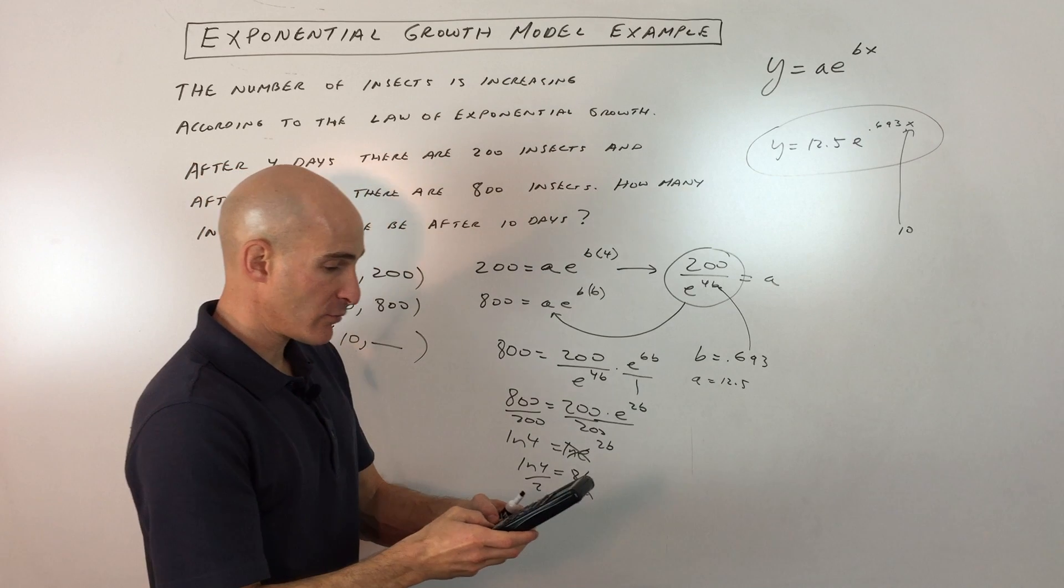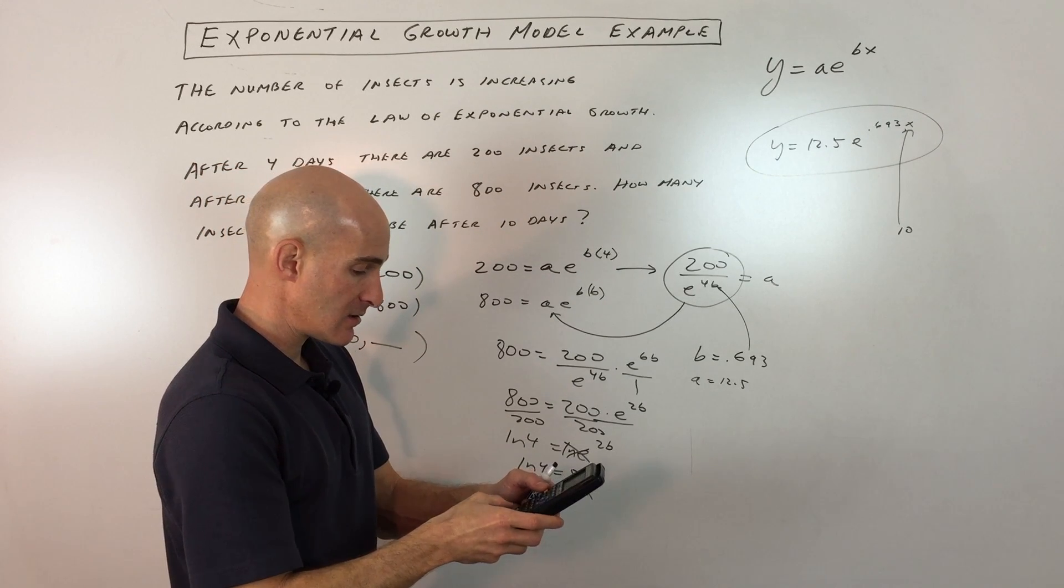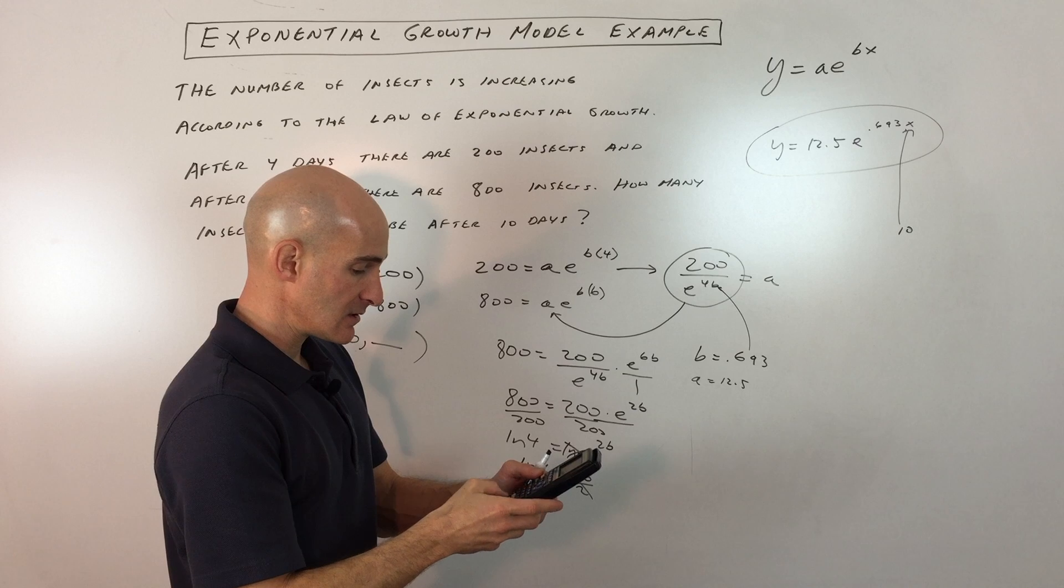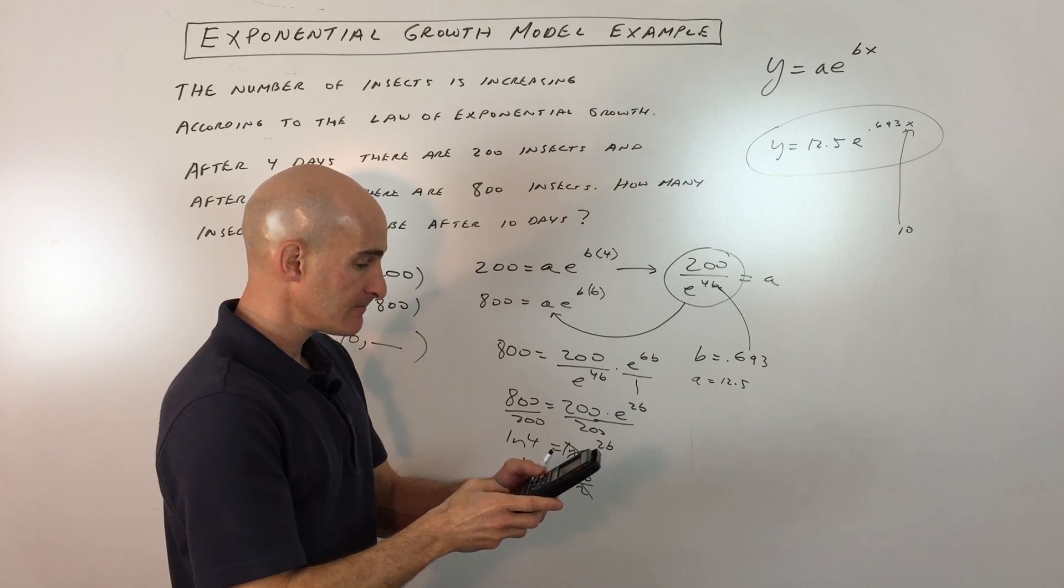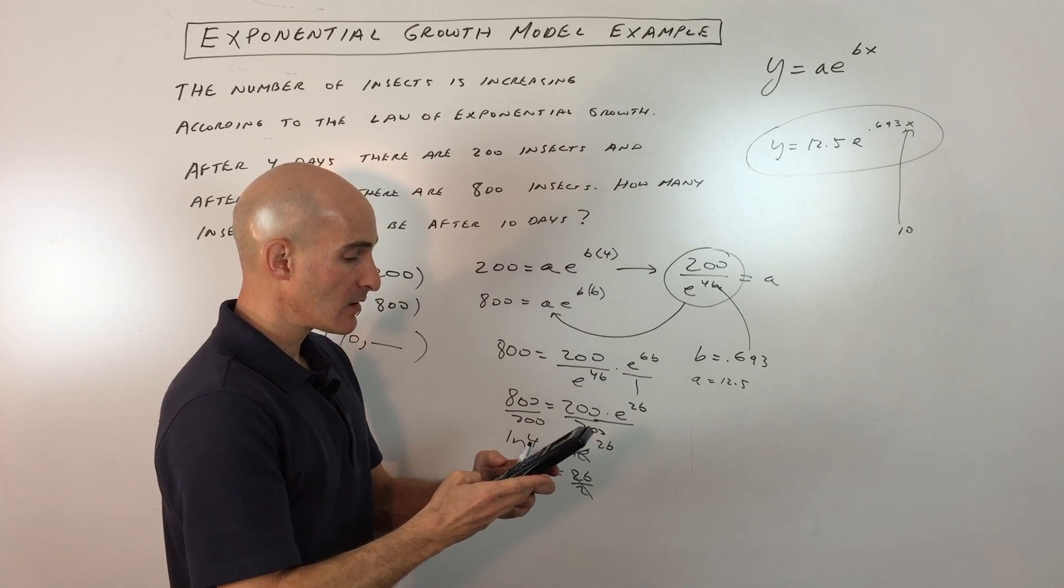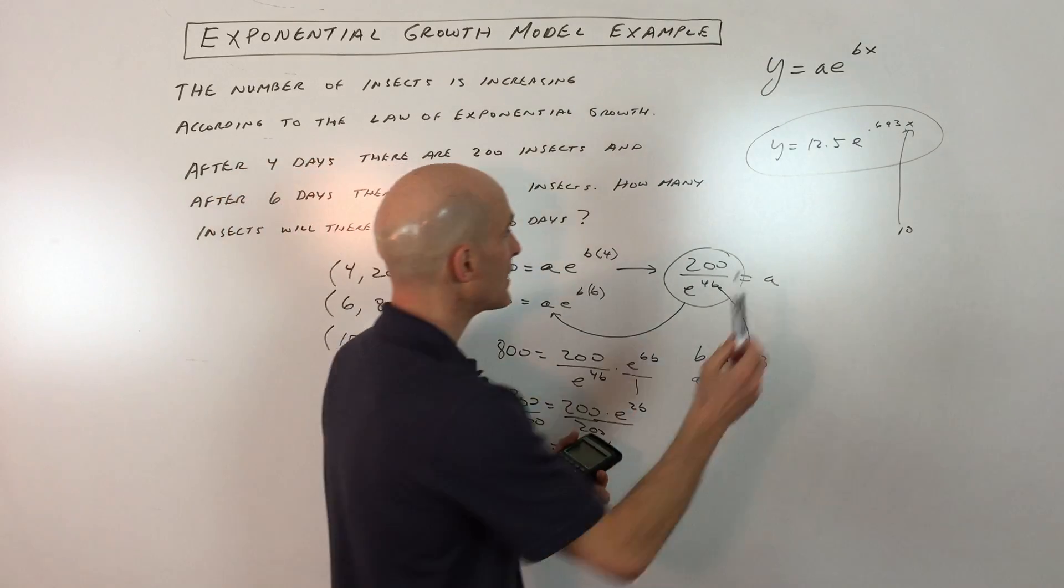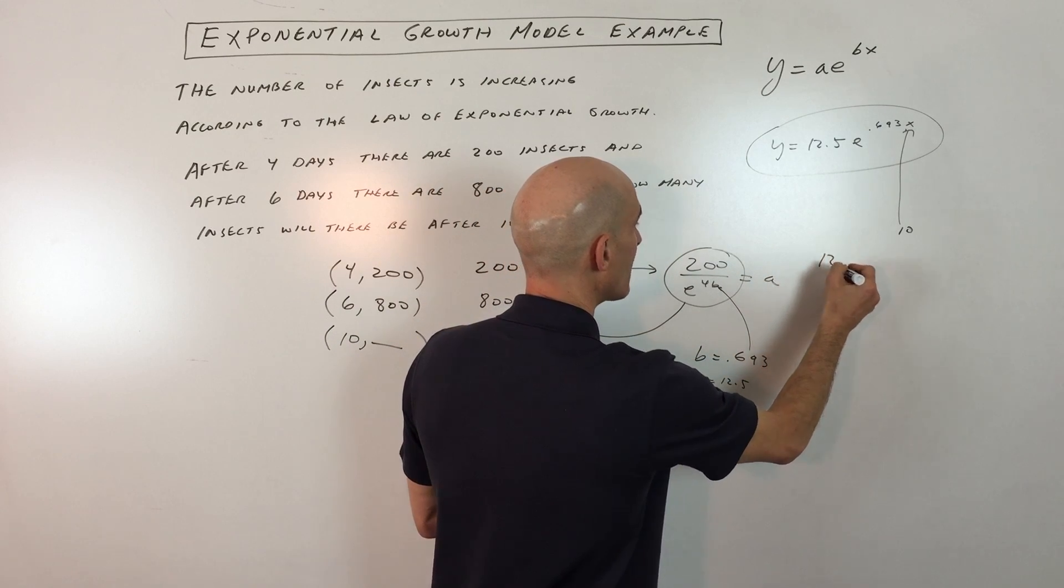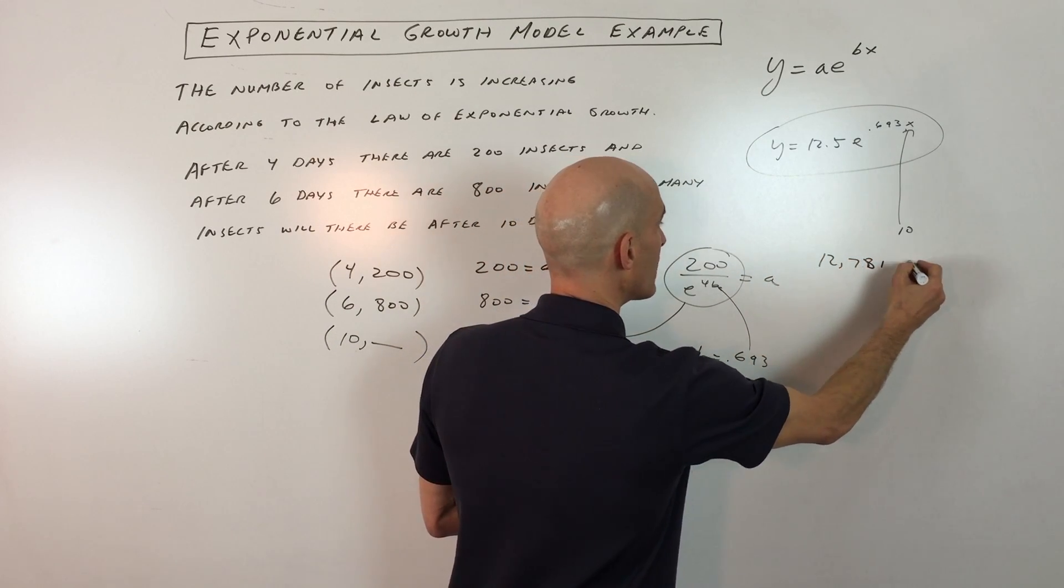We've got 12.5 times e to the 0.693 times 10. That's approximately 12,781. So 12,781 insects.